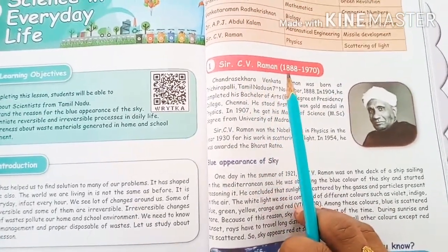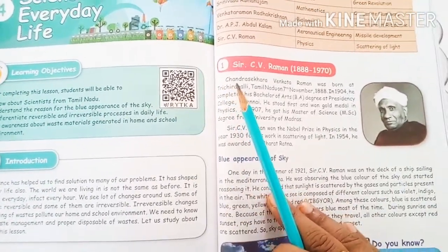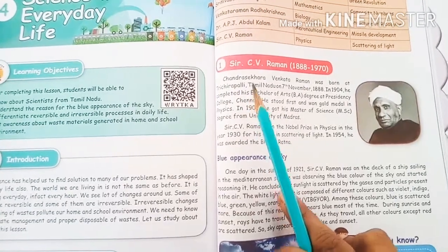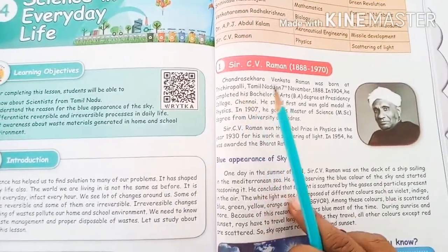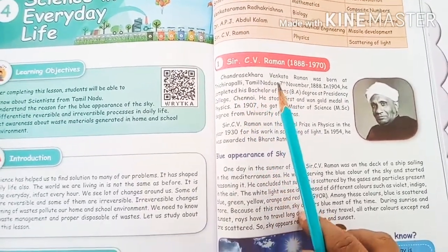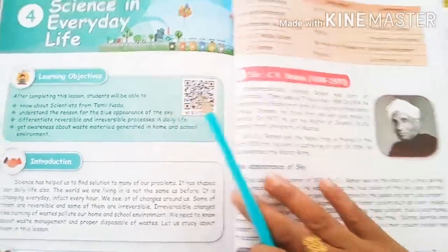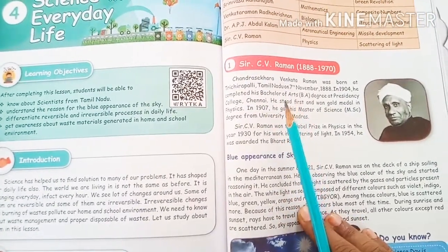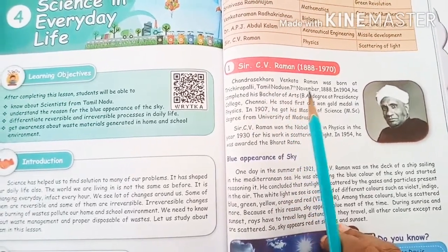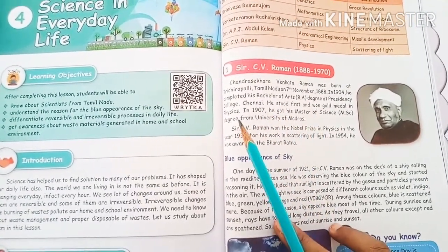Sir C.V. Raman was born in 1888 and passed away in 1970. His full name is Chandrasekara Venkata Raman, and he was born at Tiruchirappalli on 7th November 1888. In 1904, he completed his Bachelor of Arts degree from Presidency College, Chennai, and stood first, winning the Gold Medal in Physics.